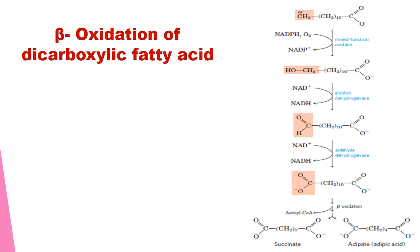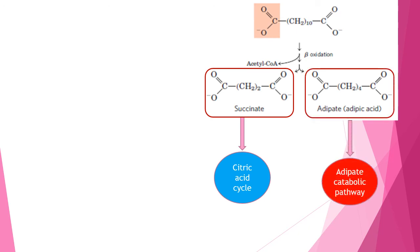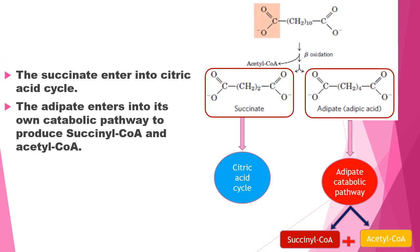Beta oxidation of dicarboxylic fatty acid: either end of the fatty acid can be attached to coenzyme A and the molecule can enter into the mitochondrion matrix. Inside the mitochondrion, it undergoes a sequence of beta oxidation to produce succinate and adipate. Succinate can enter into the citric acid cycle and be converted into energy equivalents. Similarly, adipate enters into its own catabolic pathway to produce succinyl coenzyme A and acetyl coenzyme A, which also enter the citric acid cycle and are converted into energy equivalents.